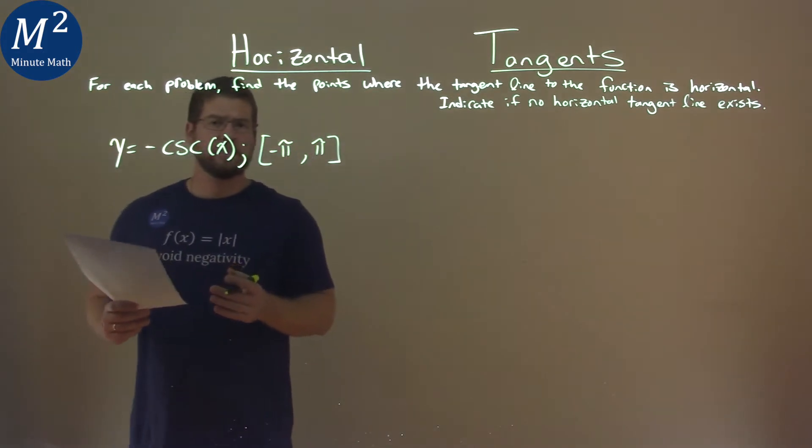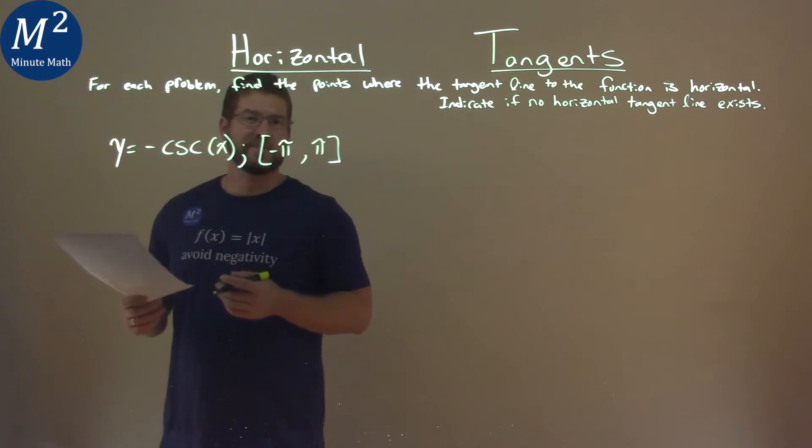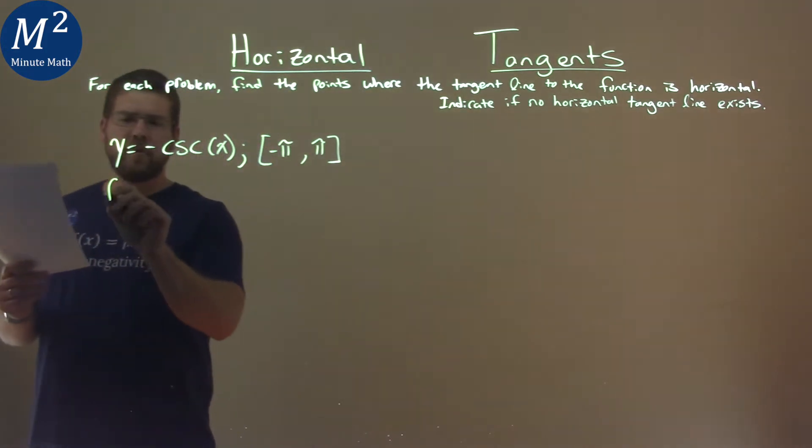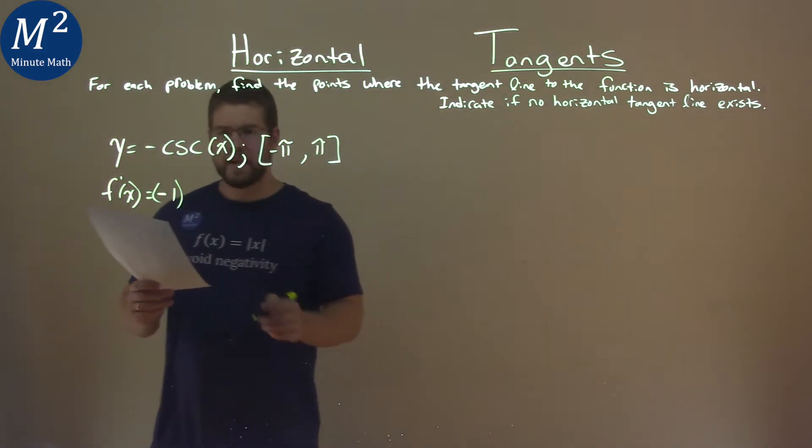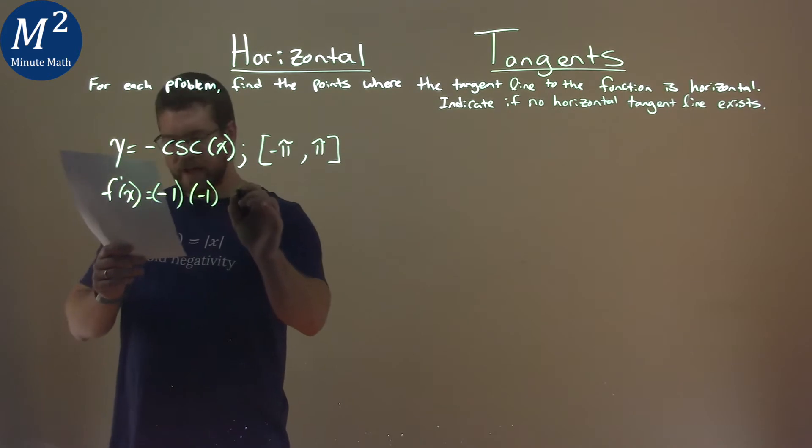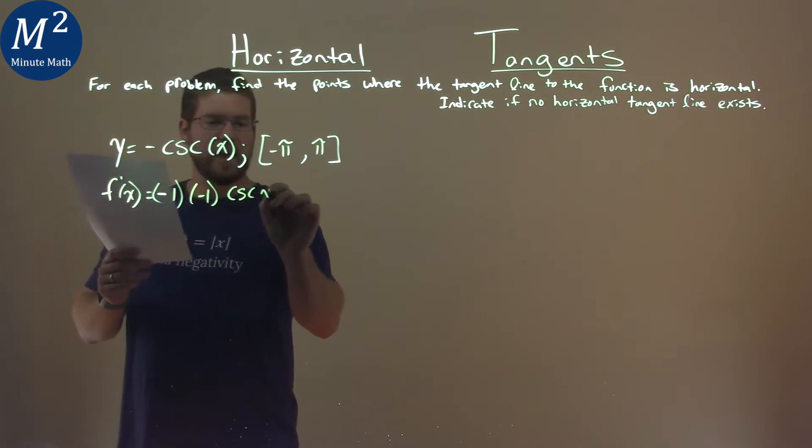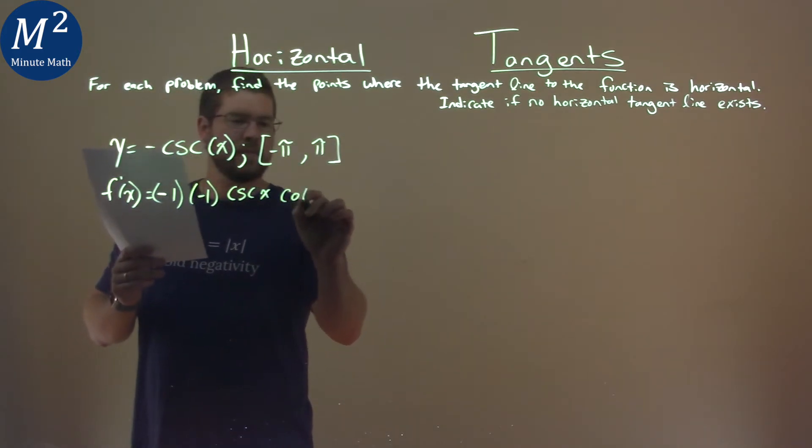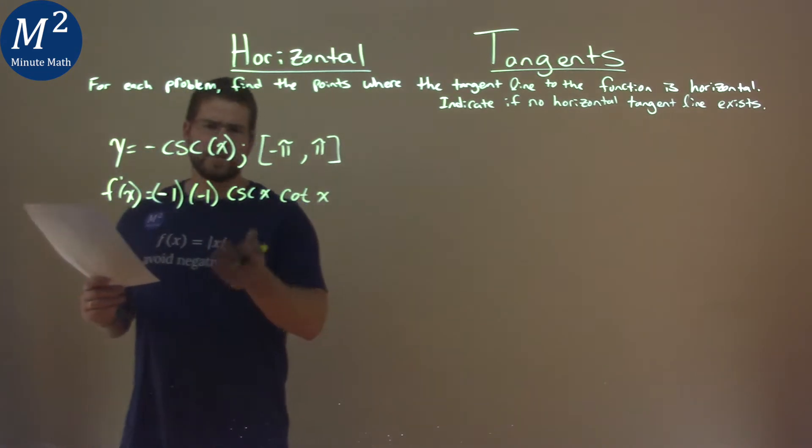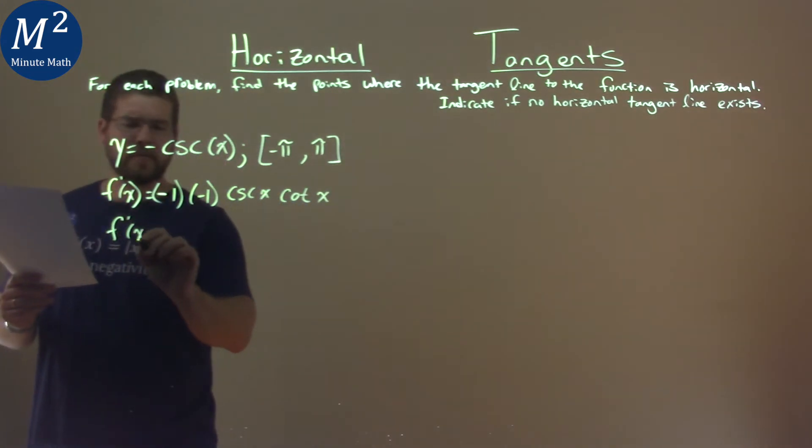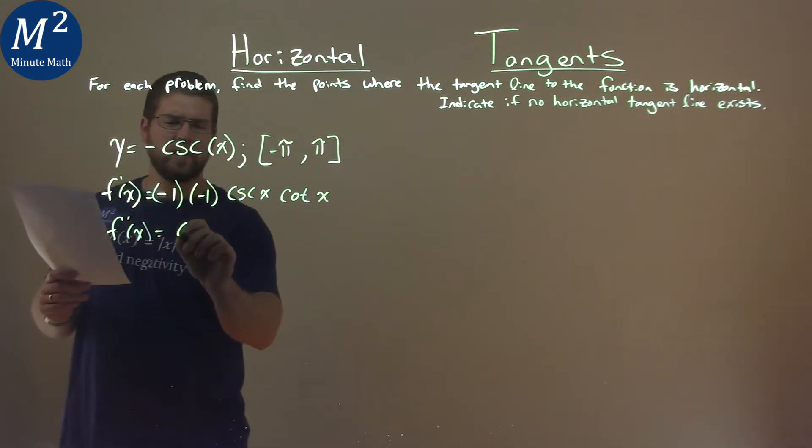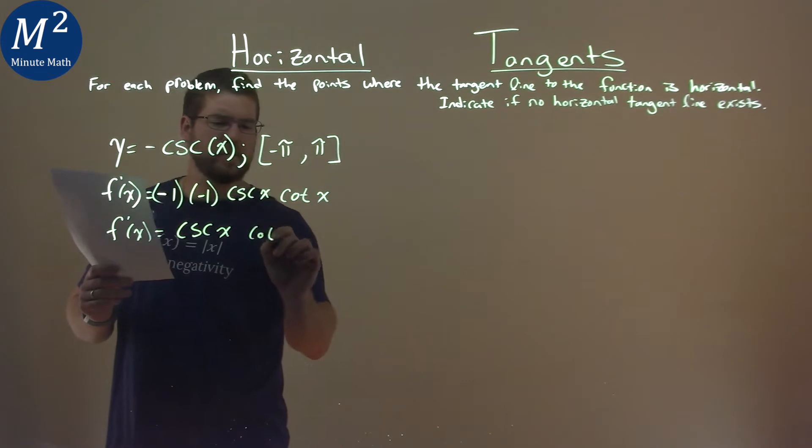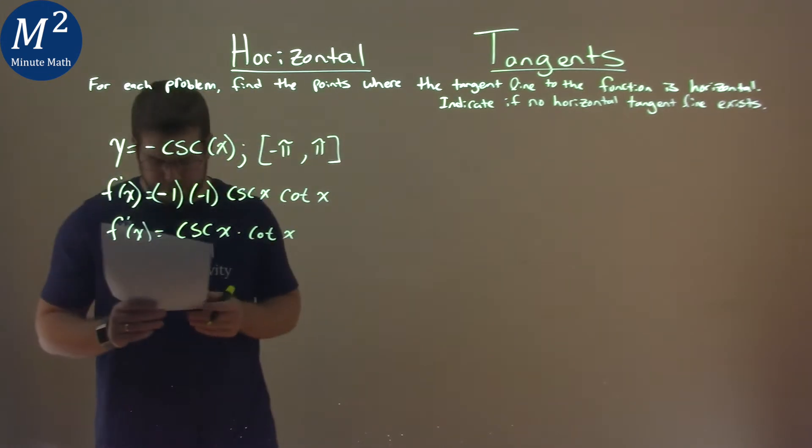Well, first thing we want to do is find the derivative here of our cosecant. So the f prime of x here, the negative stays out front, so let's call it negative 1 here, and the derivative of cosecant x is negative cosecant x cotangent of x. Now we can simplify this a little bit more. f prime of x: negative 1s cancel each other out or multiply to be positive 1, and so we have cosecant of x and cotangent of x being multiplied there.